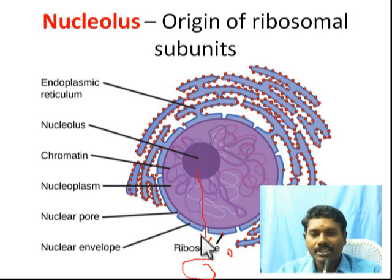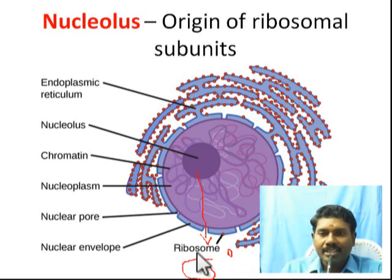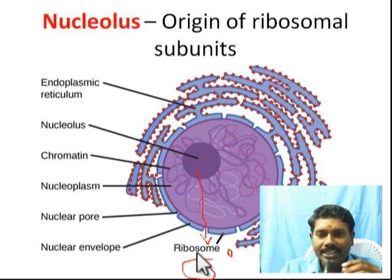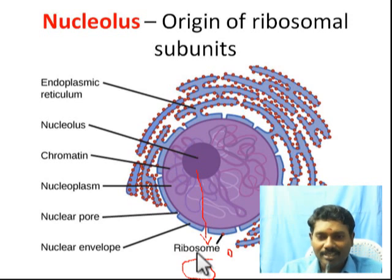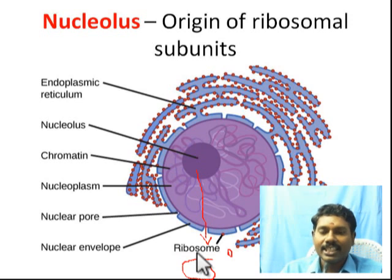The subunits join together only during the translation process. In prokaryotes, since there is no nuclear membrane, ribosomes are synthesized directly in the cytoplasm. The ribosome synthesis happens in the cytoplasm in prokaryotes.